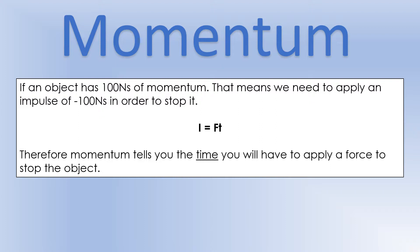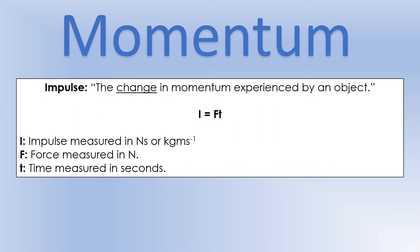Let's define impulse. Impulse is the change in momentum experienced by an object, and we calculate impulse using force times time. Impulse has the same units as momentum because it's just the change in momentum — force is in Newtons, time in seconds.